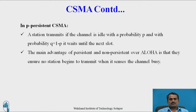Third one is P-Persistent CSMA, where P stands for Probability-Persistent CSMA. We have to find out the probability of collision in the transmission process. A station transmits if the channel is idle with a probability P, and with a probability Q equals to 1 minus P, it waits until the next slot. If the collision probability is 1, we apply the formula Q equals 1 minus P. That gives 1 minus P equals 0, meaning there is no collision.